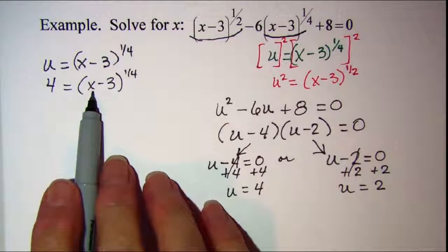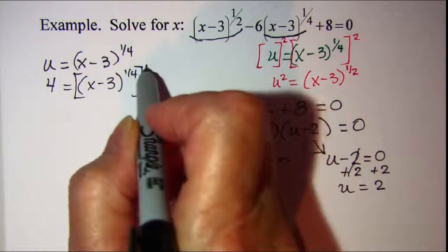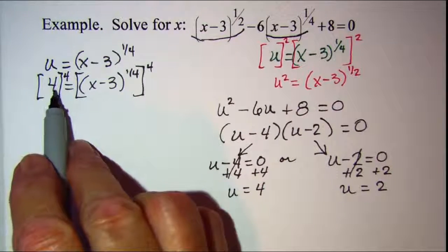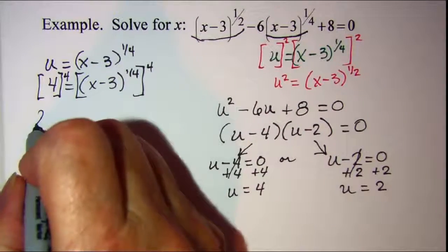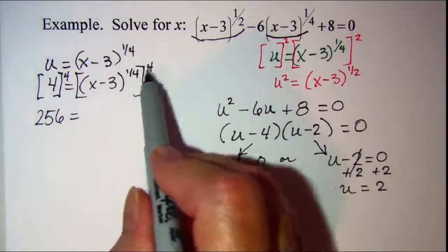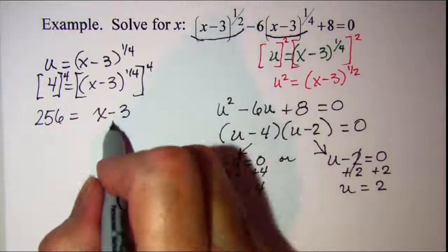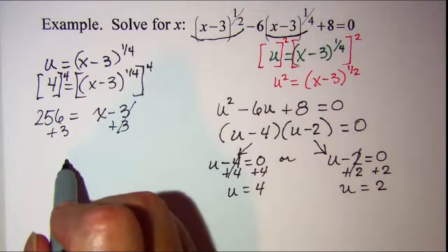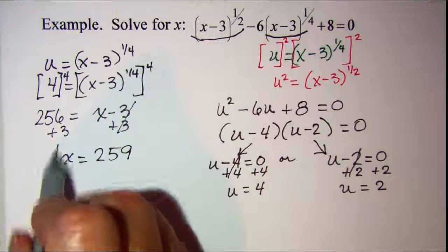I'm wanting to solve for x so I can raise both sides to the fourth power. Four to the fourth is 256. And then multiply these exponents, one-fourth times four that's just one, so I have x minus three. We'll add three to both sides. These will cancel and I have x equals 259. That's one of my solutions.